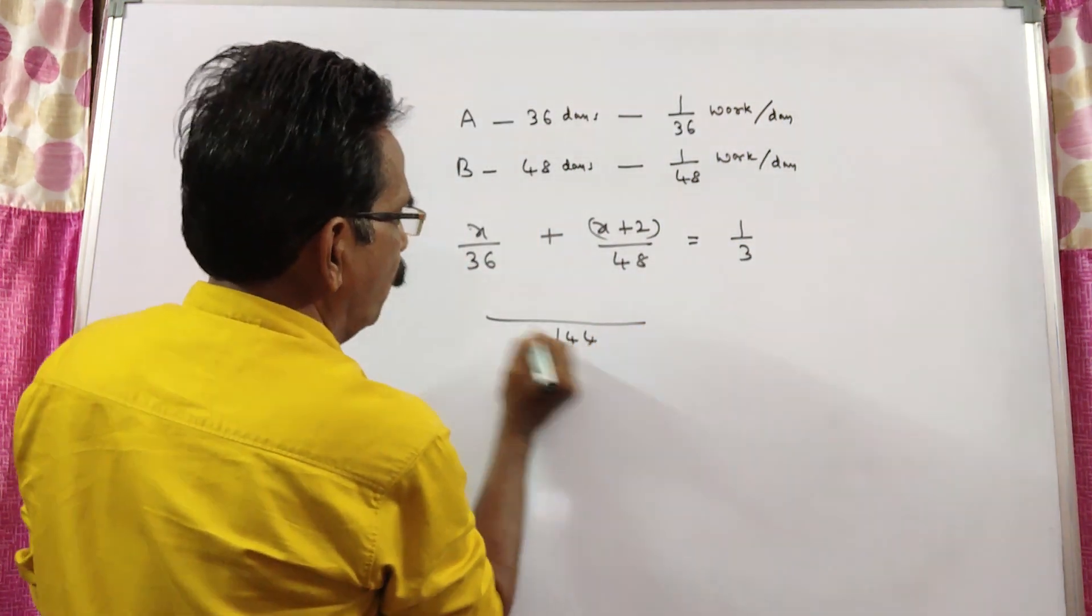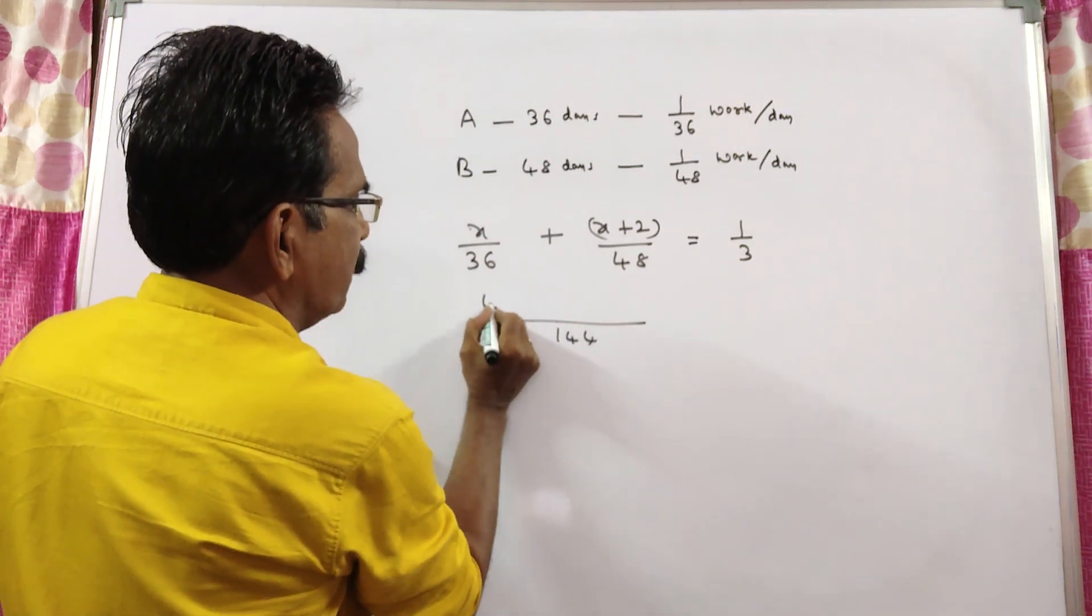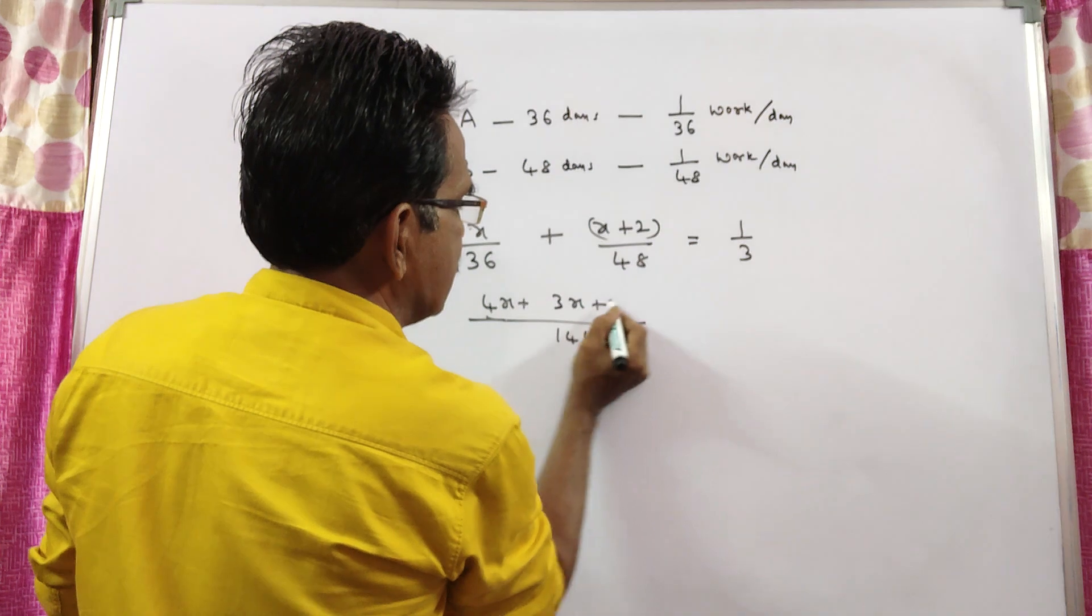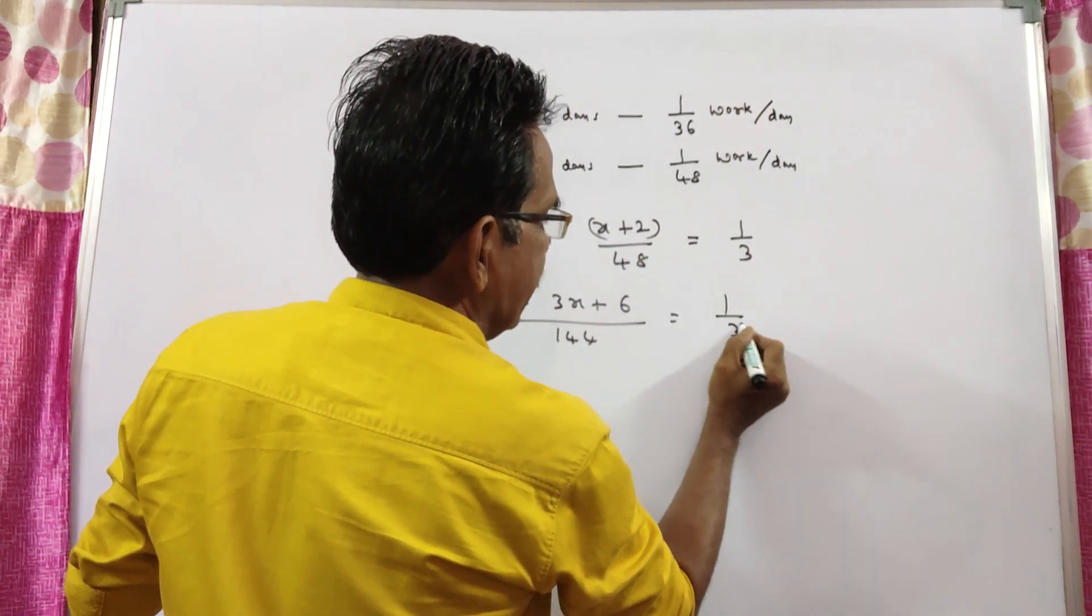So, LCM 144, 36 fours, 4X plus 48 threes, 3X plus 6 equals 1 by 3.